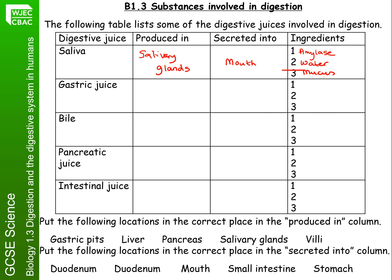The second juice is gastric juice. This is produced in gastric pits and released into the stomach. Within that, you would find acid, protease enzyme, and mucus.